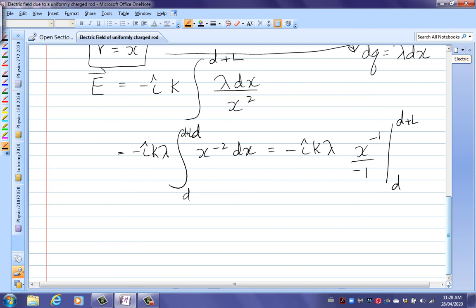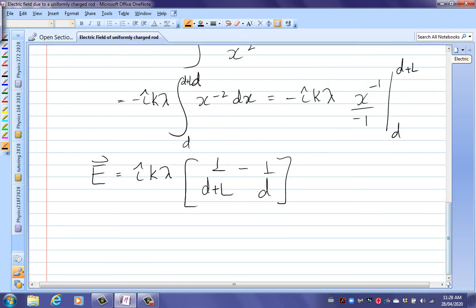And we have that the electric field now. I can put those two negatives together. So I've got i hat k lambda. 1 over d plus L minus 1 over d. Now, I do know what points left. So the thing in the brackets is actually a negative number. So I'm just going to tidy that up a bit. I'm going to pull the negative out again. Negative i hat k lambda. And I'm going to take that to a common denominator. And I'm going to have L over d times d plus L.